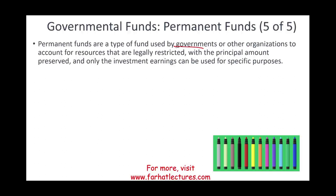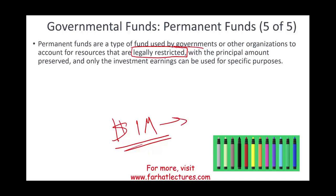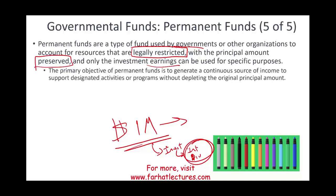Permanent funds are used by governments to account for resources that are restricted. For example, an individual contributes one million dollars to the government to maintain a park, but you cannot touch the principal. So you preserve and invest the million dollars, and from the investment you get interest and dividends — whether you invest in stocks or bonds. You can spend the earnings to maintain the park, but not the principal. The primary objective is to generate a continuous source of income to support the designated activity without depleting the original amount.